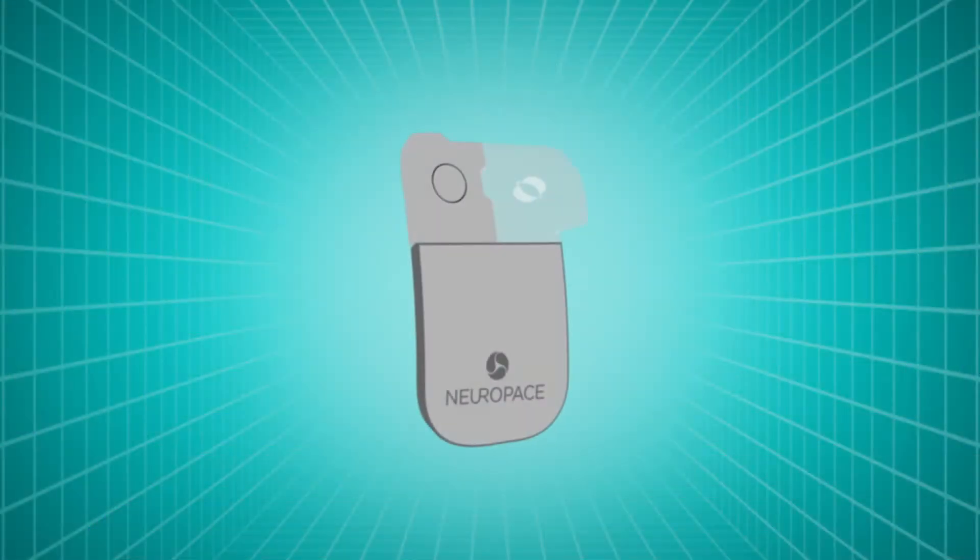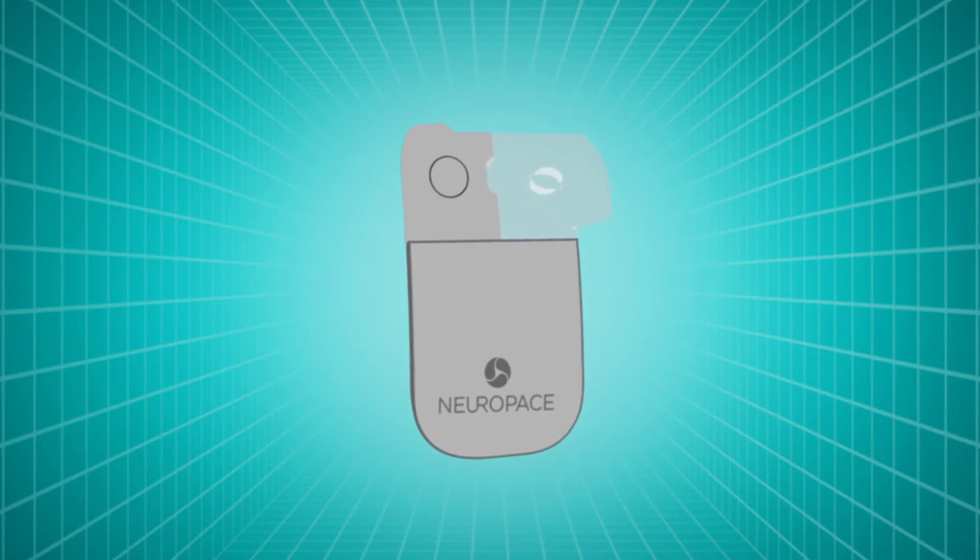The Neuropace RNS System for Epilepsy is helping prevent seizures. The Neurosimulator is like a pacemaker for the brain.